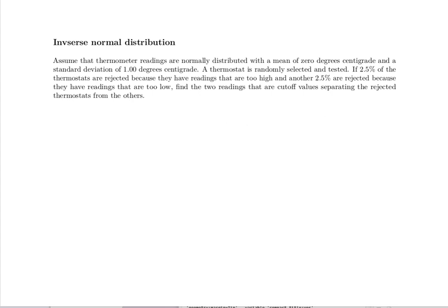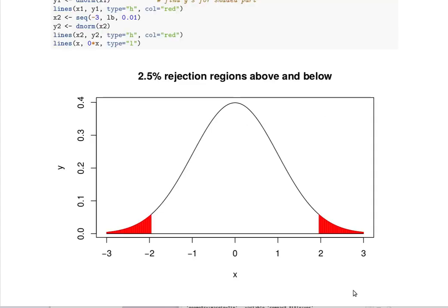Let's draw a picture. So our rejection region will be 2.5% above some particular number here. It's looking like it's pretty close to 2. And that number is going to, so that area, that probability up here is going to be 0.025.